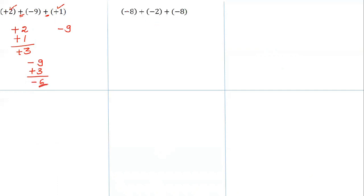Now add minus 8, minus 2, and minus 8. In between the integers there is an addition sign. Group the numbers having the same sign: minus 8, minus 2, minus 8 — all have the same sign, so add them all. That is minus 18.